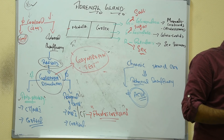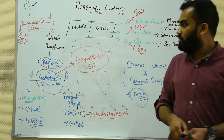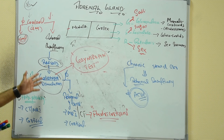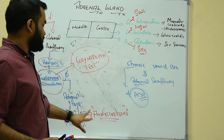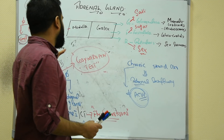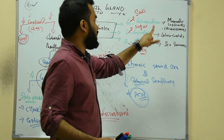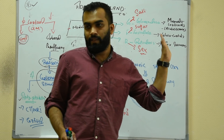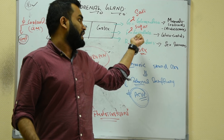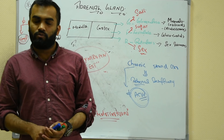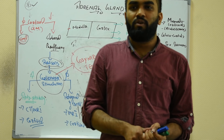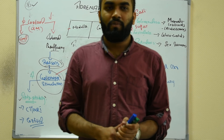To summarize Addison's disease: it is hypo-functioning of the adrenal cortex. The diagnostic test is the cosyntropin test. The drug for adrenal gland insufficiency is fludrocortisone. In adrenal insufficiency, there is less aldosterone leading to less sodium and more potassium, and less cortisol causing glucose problems. Next, we will move to Conn's syndrome.